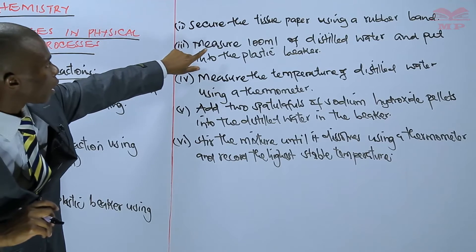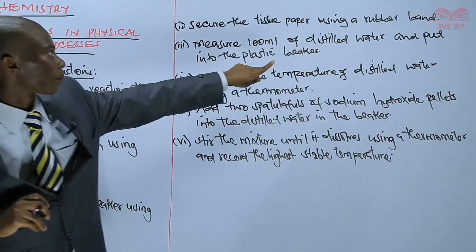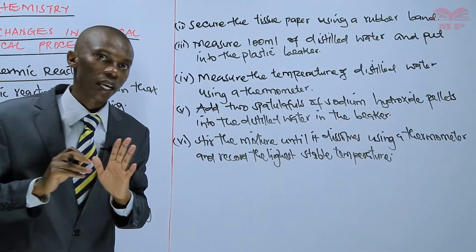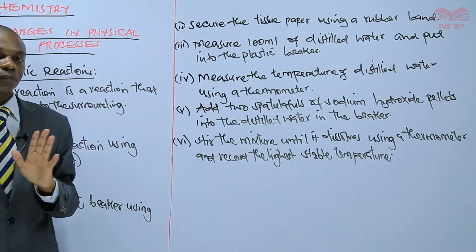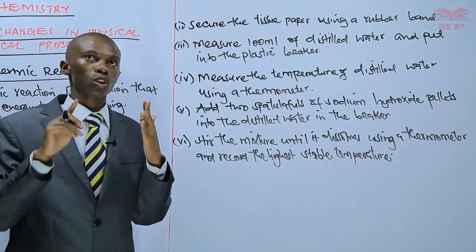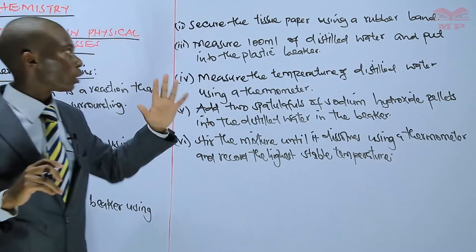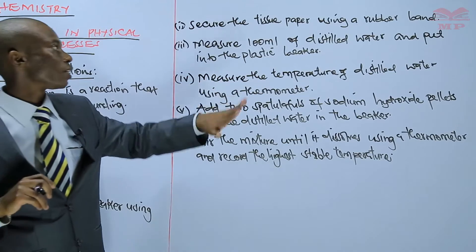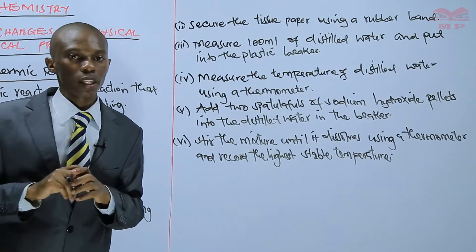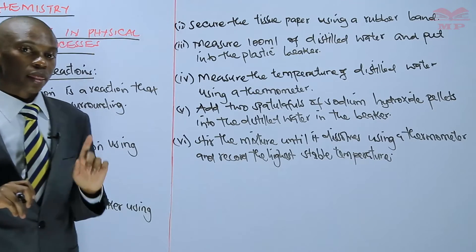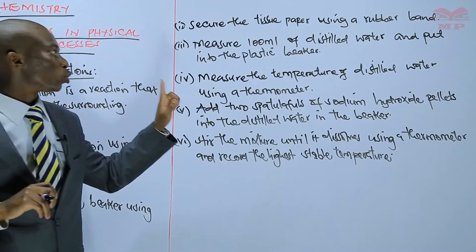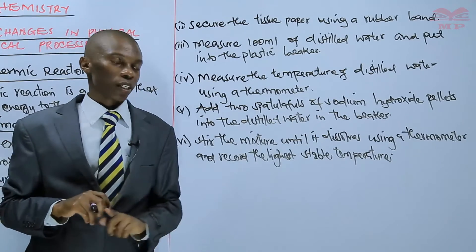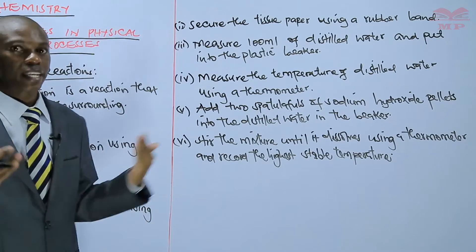Procedure number three is to measure 100 ml of distilled water and put it into the plastic beaker, using either a measuring cylinder or a burette. Procedure number four is to measure the temperature of that distilled water using a thermometer. Procedure number five: add two spatula folds of sodium hydroxide pellets into the distilled water in the beaker.